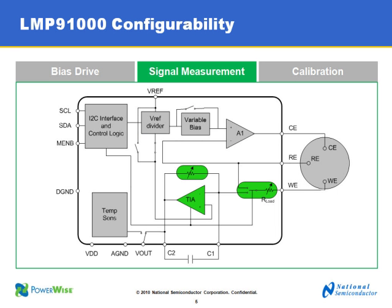Now for signal measurement — the green highlighted boxes. The programmable trans-impedance amplifier (TIA) translates the working electrode current into an output voltage. The gain is user-programmable in eight steps through the digital interface and covers a wide range. The programmable TIA combined with the variable cell bias is the key reason the LMP91000 can address such a large number of gases and gas concentrations.